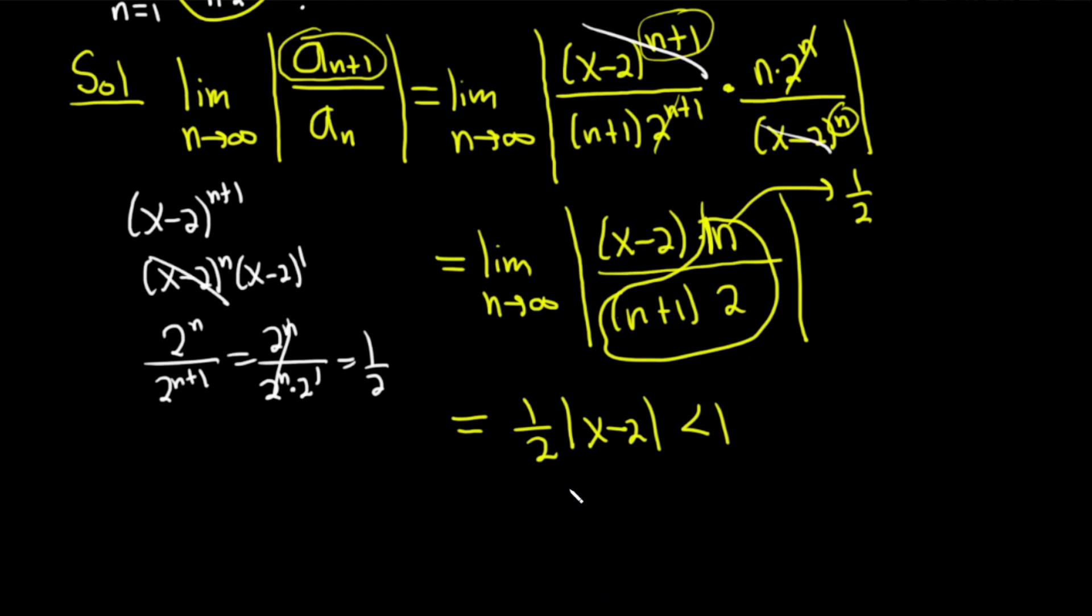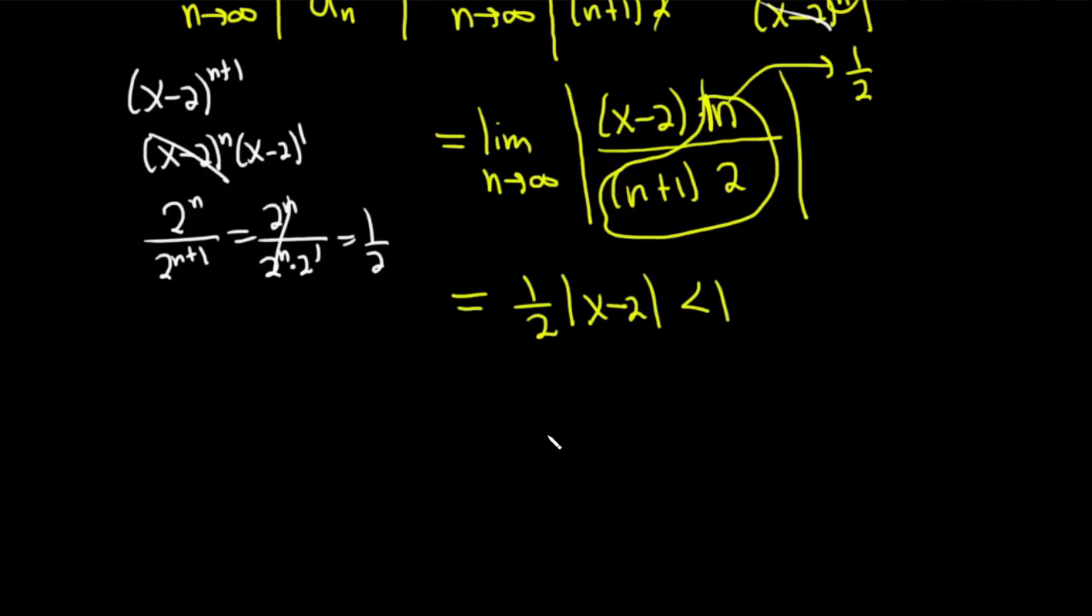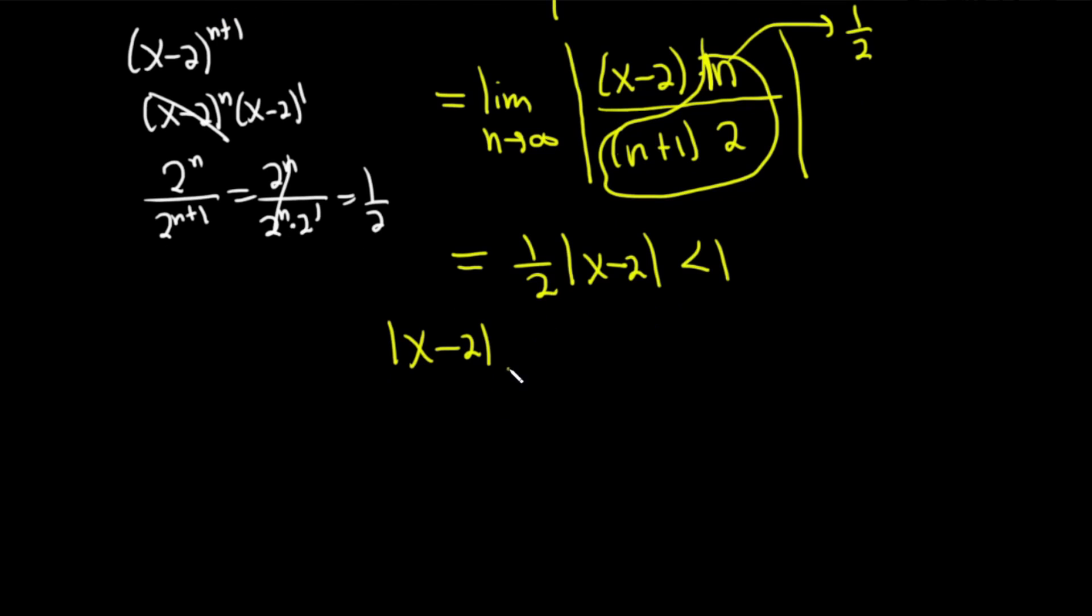We want this to be less than 1 because we want it to converge by the ratio test. We multiply by 2 and get absolute value of x minus 2 is less than 2. When you drop the absolute value, you get plus 2 and minus 2. Then add 2 to all three sides.